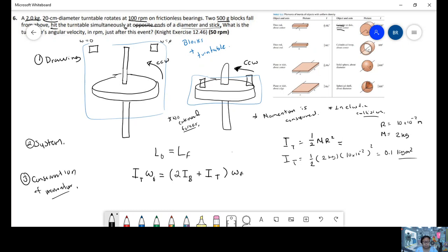Now, the moment of inertia of the blocks, they are at the end of the diameter. Since we don't have a specific shape, we're going to just use our regular formula that is mass times radius squared. So the mass is 0.5 and the radius is 0.1.